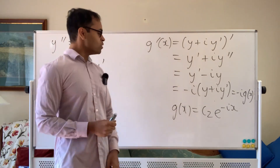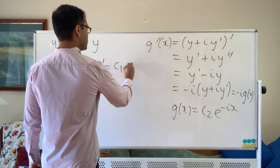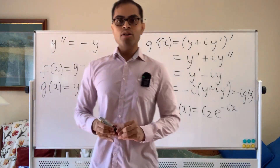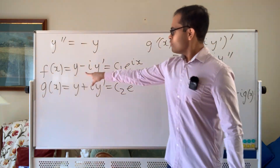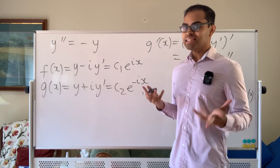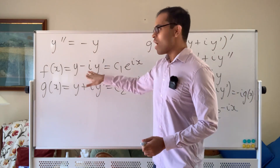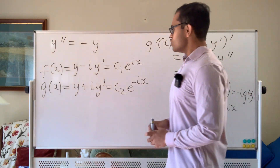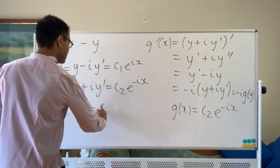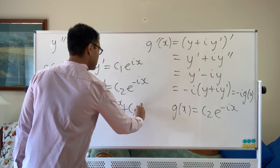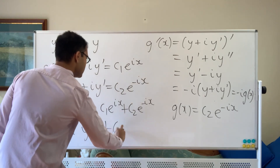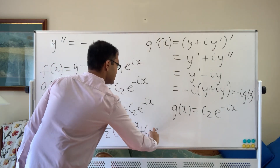Now we do something super cool. We have f and g as simultaneous equations in y and y prime. Adding the two equations, the y prime terms cancel, giving 2 times y equals c1 e to the i x plus c2 e to the negative i x. Therefore y equals one half times c1 e to the i x plus c2 e to the negative i x.